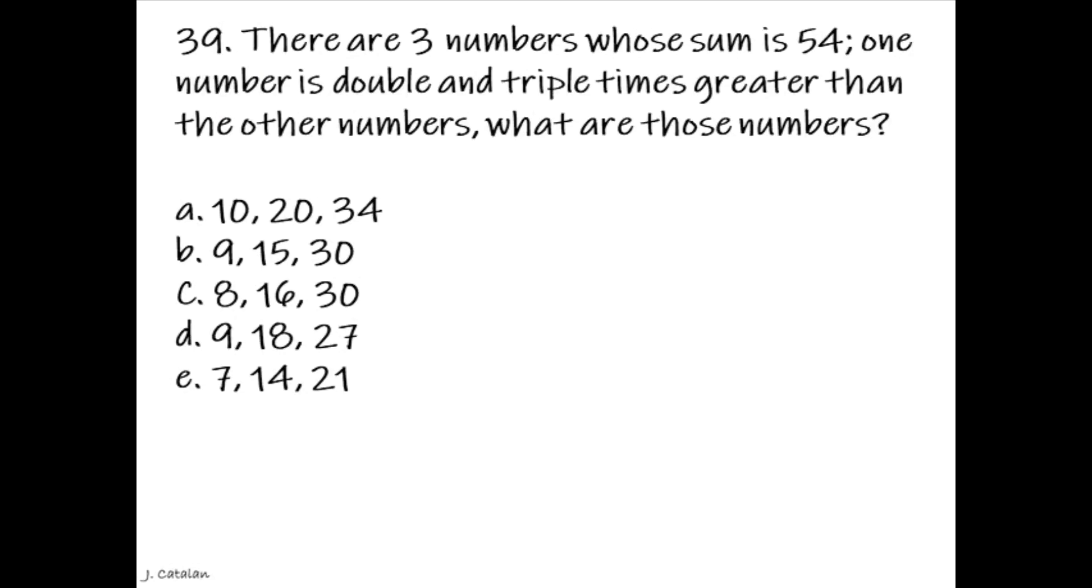Question. There are 3 numbers whose sum is 54, one number is double and triple times greater than the other numbers. What are those numbers? Answer. 9, 18, 27.